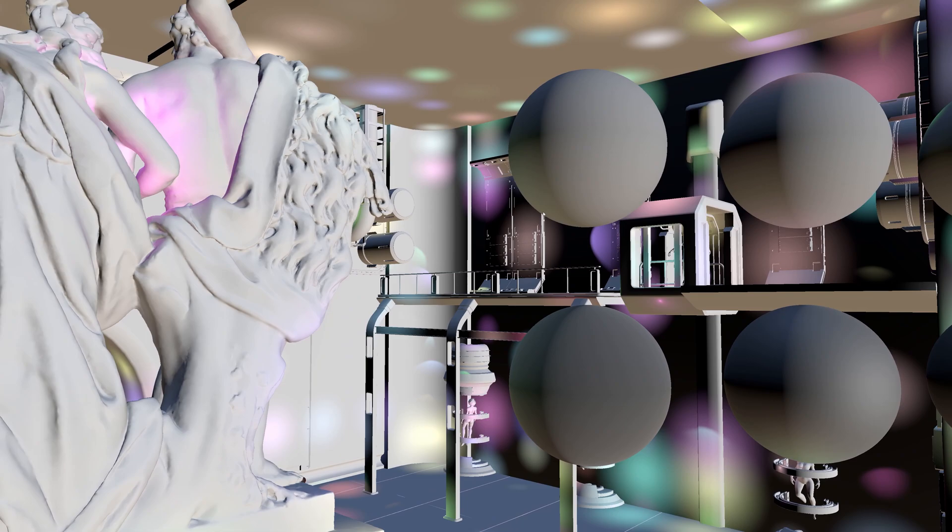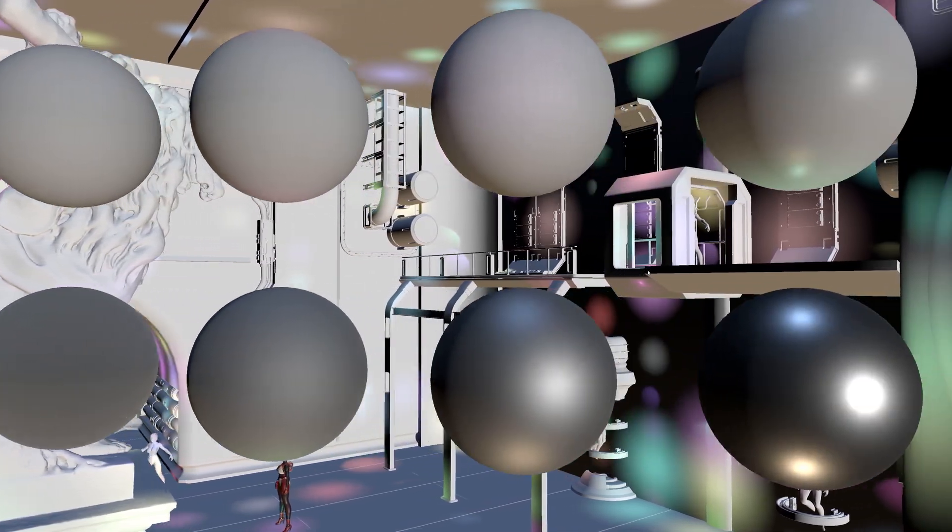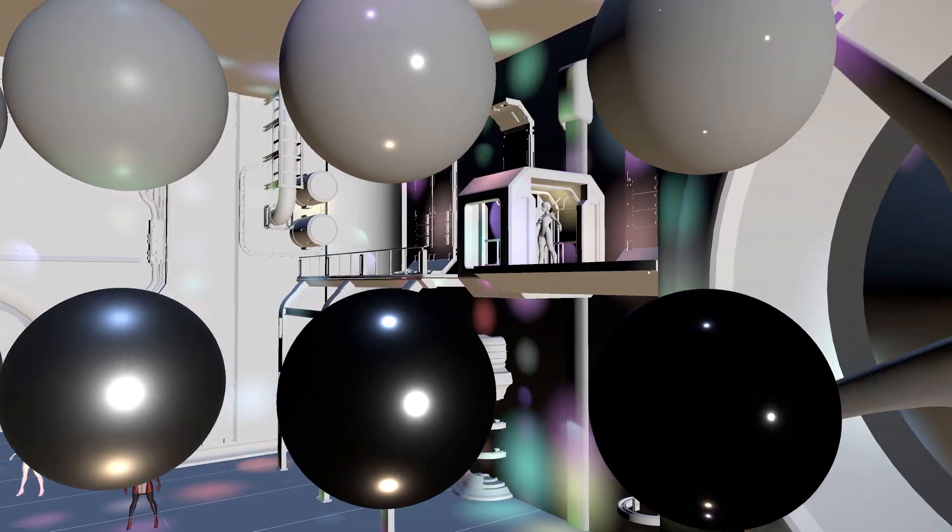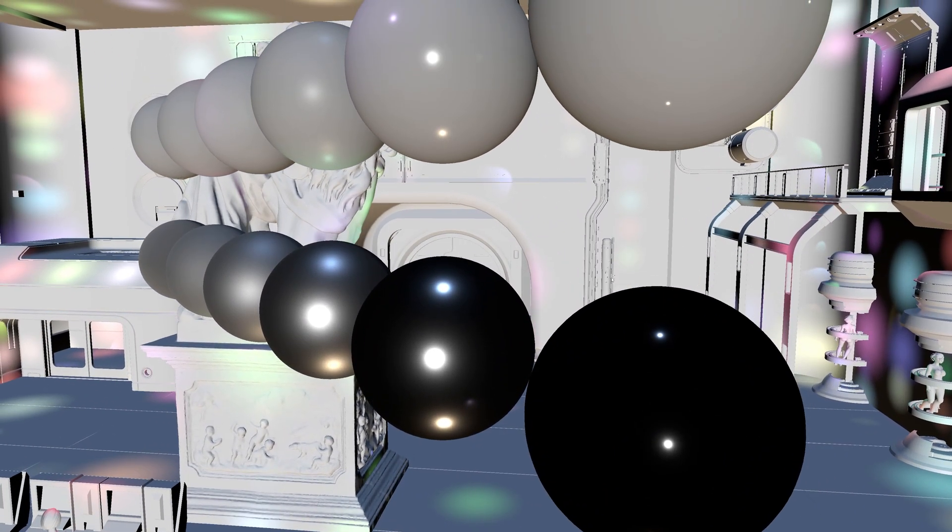One thing to notice is that fully rough metallic spheres are a bit darker than the fully rough non-metallic spheres. This is because of a loss of energy in our approximation formula. We are going to improve this when we implement image-based lighting, because then we'll have a lookup texture, which happens to contain exactly the information that we need in order to compensate for the loss of energy.